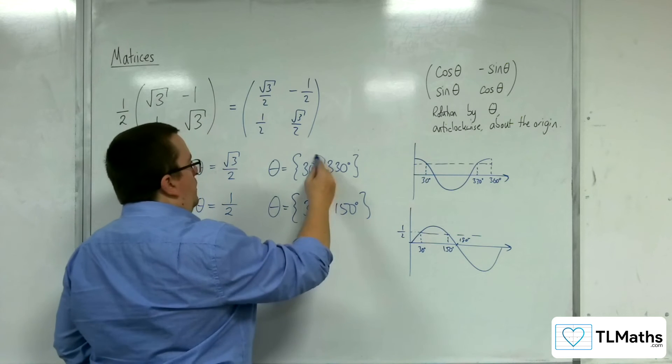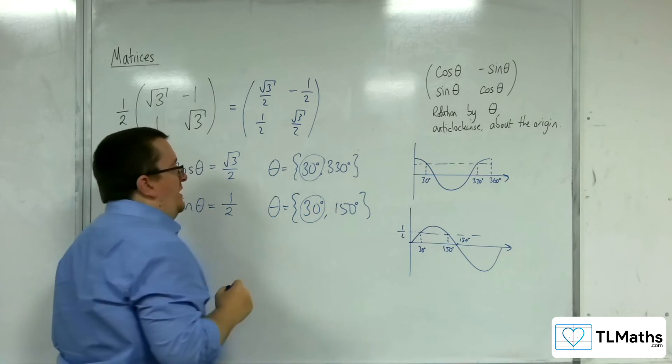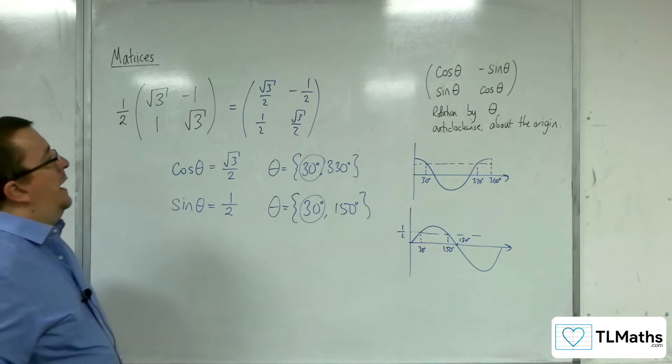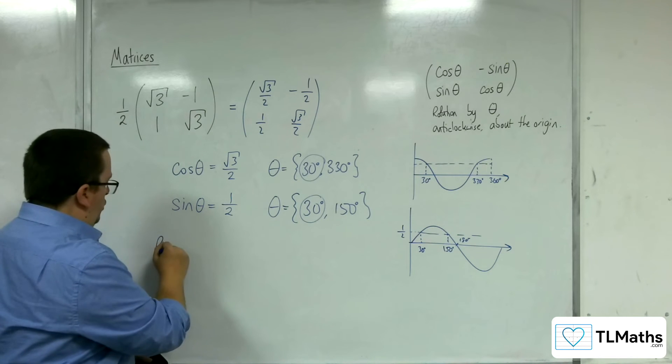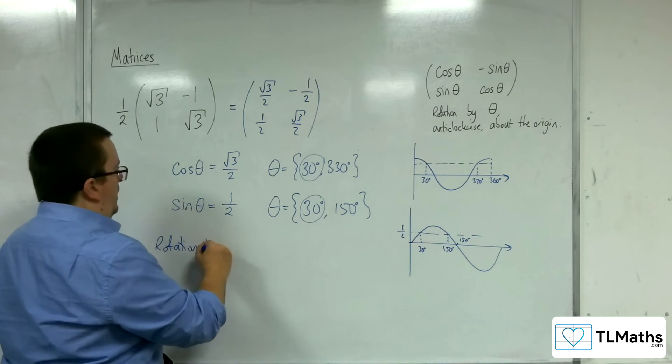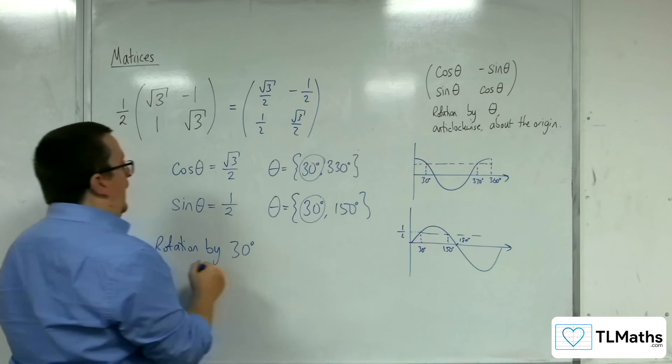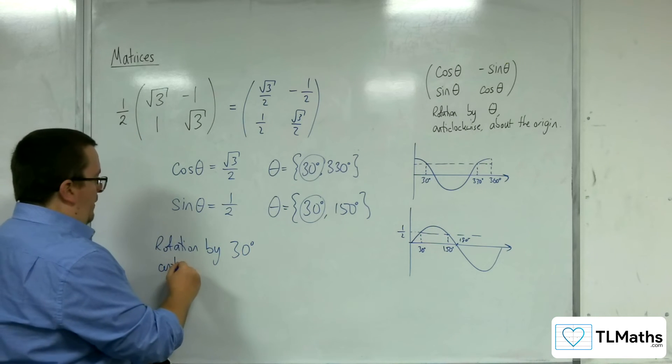So clearly, the 30 degrees is the same in both, and so this must be a rotation by 30 degrees anticlockwise about the origin.